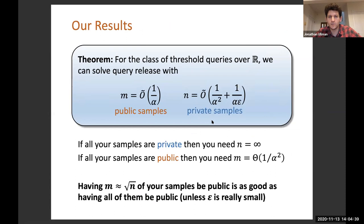Just to compare this to what I've said so far, if your data is private, if all of your samples are private, this problem can't be solved with any finite number of samples. On the other hand, if you had 1 over alpha squared public samples, then you could solve this problem without using any private data. What we show is that if about square root of your total number of samples are public, that's as good as having them all be public, except when epsilon is really small. If even a small fraction of your data is public, then it's as good as having all the data be public.